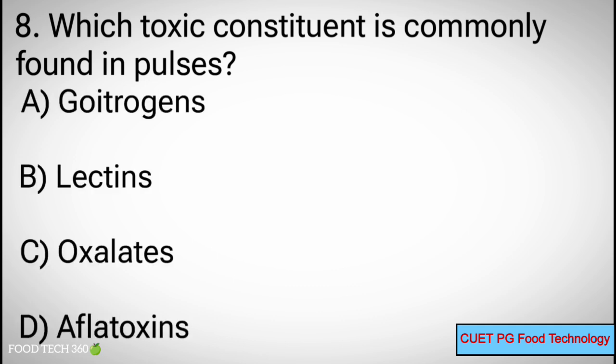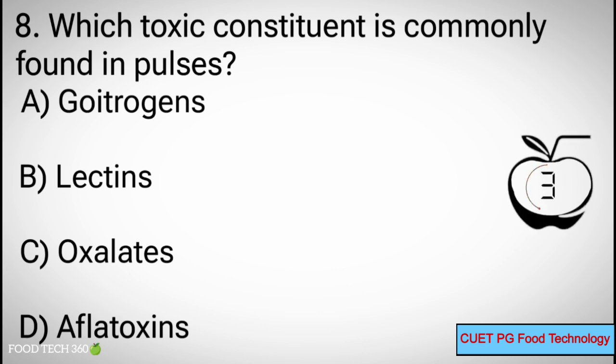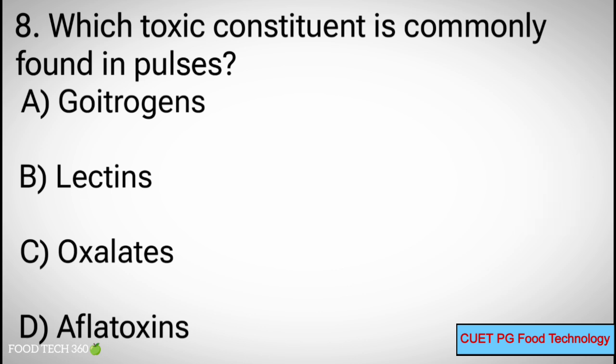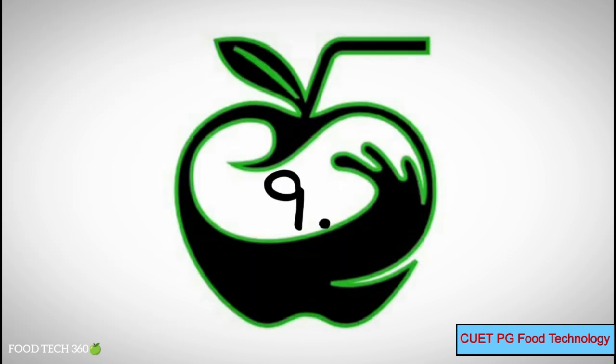Question number 8: Which toxic constituent is commonly found in pulses? Options: A. Goitrogens, B. Lectins, C. Oxalates, D. Aflatoxins. Correct answer: B. Lectins.